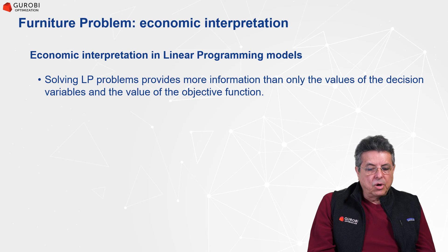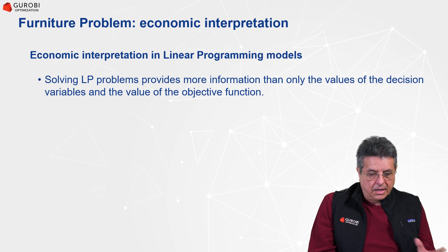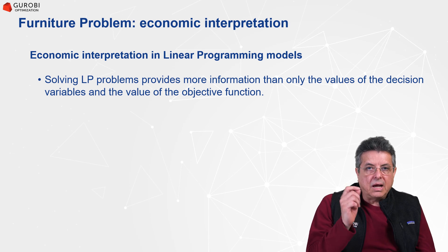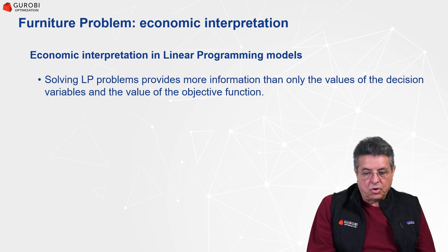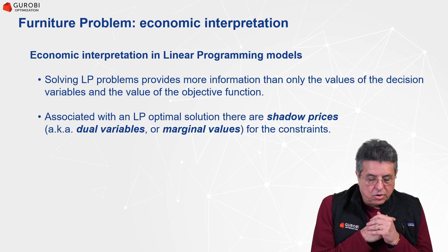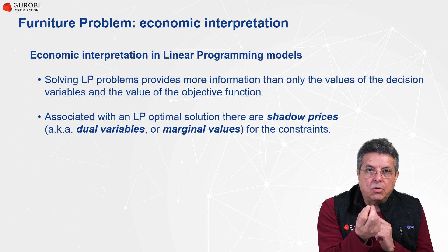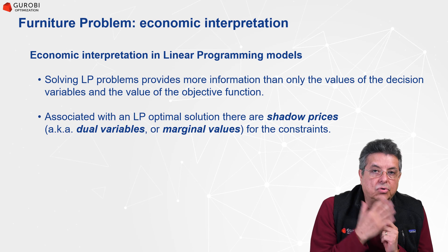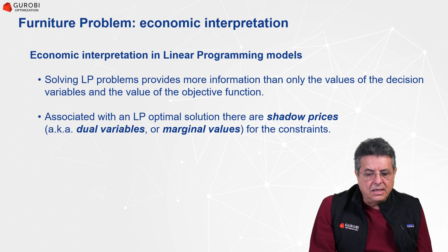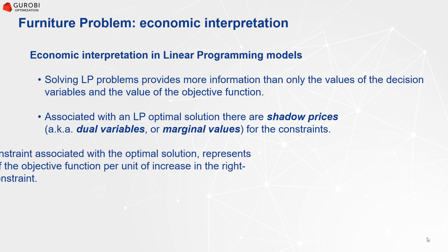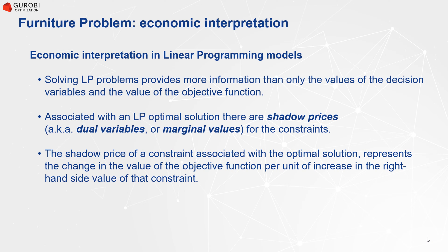When you solve a linear programming problem, you will get information not only about the values of the decision variables and the objective function. You will also get information related to the constraints, and this information is called shadow prices, also called dual variables or marginal values. This information is very important and critical for the solution of LP problems, and the economical interpretation they have is very valuable.